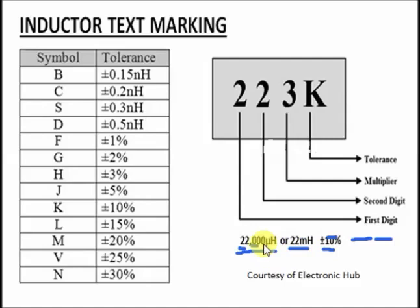This is because when you count three places back from the decimal in 22,000 microhenry — moving from micro (10⁻⁶) up three steps — you get milli (10⁻³), so 22,000 microhenry becomes 22 millihenry.